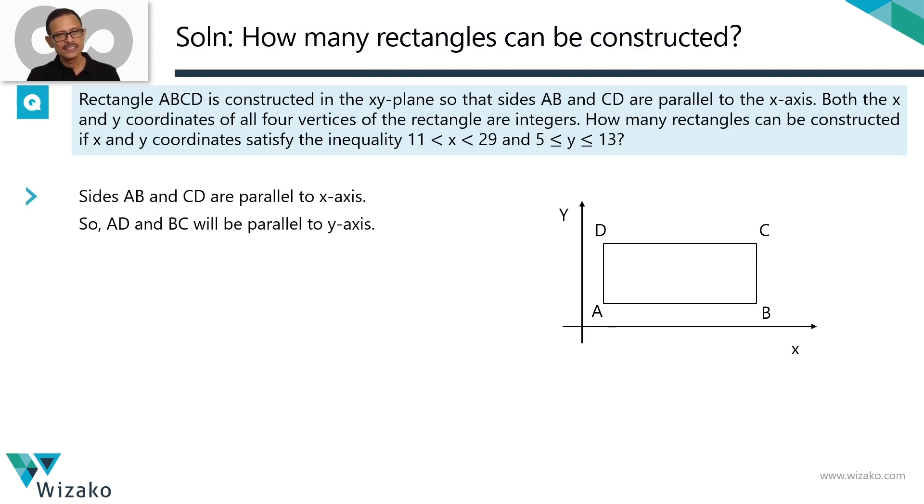Let's draw a rectangle and see what all conditions it should satisfy. The first one, AB and CD should be parallel to the X axis. That they are. Which means the other two sides, AD and BC will be parallel to the Y axis. That's point number one. They mentioned this. We have done it.